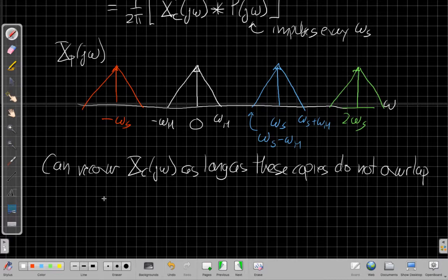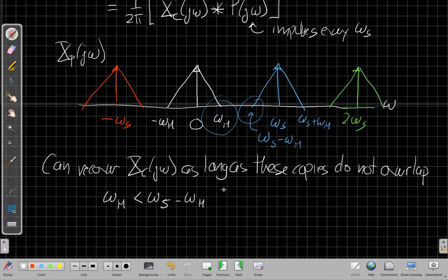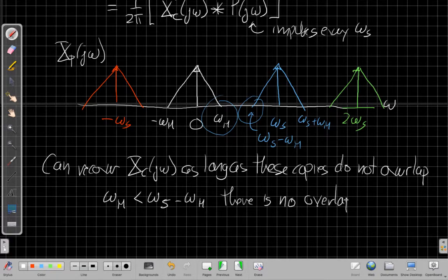What does that mean mathematically? That means I need omega_m, and I need this point right here to be below this point right here. As long as that's true, if omega_m is less than omega_s minus omega_m, there is no overlap. So if I solve this the other way, this says I need 2 omega_m has to be less than omega_s, or equivalently that the radian sampling frequency, omega_s, has to be at least two times the highest frequency, the upper limit of my band limited signal. And so this is often what's called the sampling theorem.